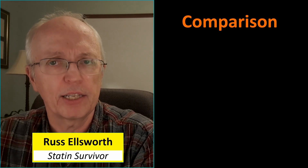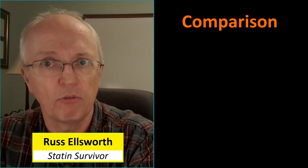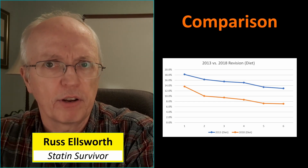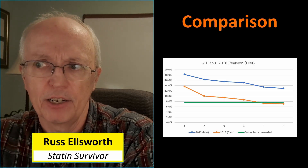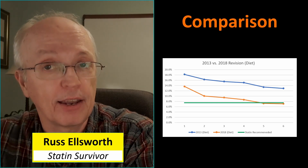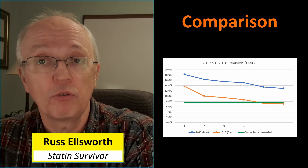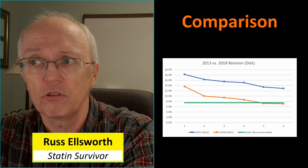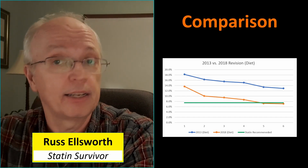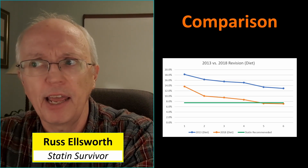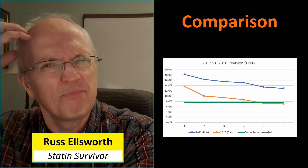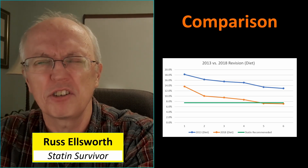Now let's do a comparison between these two equations using the lipid panel results from my diet versus statins video. The blue line is the 2013 equation and the orange line is the 2018 equation. The green line is the threshold — if you're higher than that, your doctor will have a discussion with you about initiating statins. Using the 2013 calculator, my doctor would say I still need a statin even after dietary improvements. But using the 2018 equation, I'm below the line — no statin needed. So why does the ACC/AHA online calculator still use the old equation?